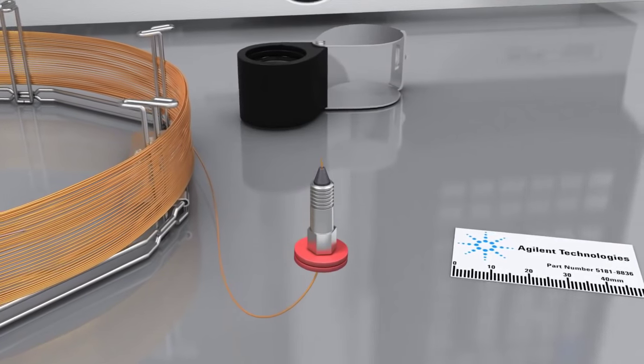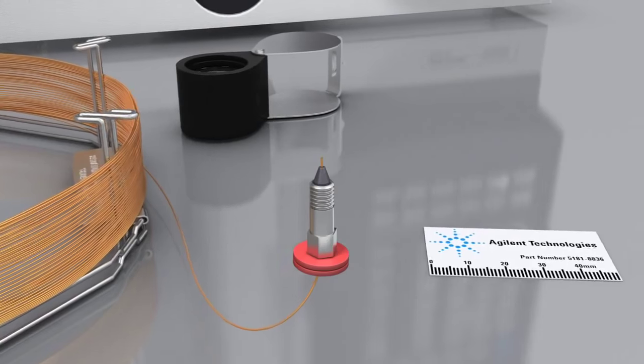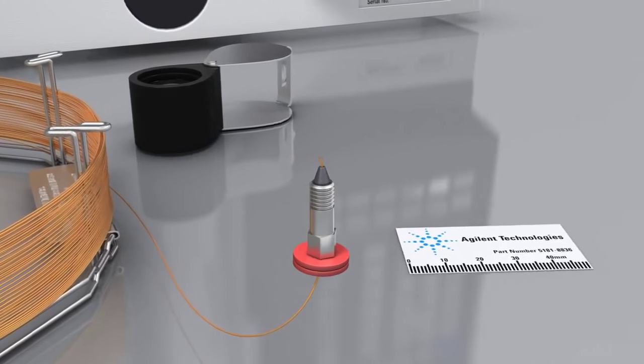Graphite polyamide blend ferrules are very popular but are known to leak after temperature cycles due to ferrule shrinkage.